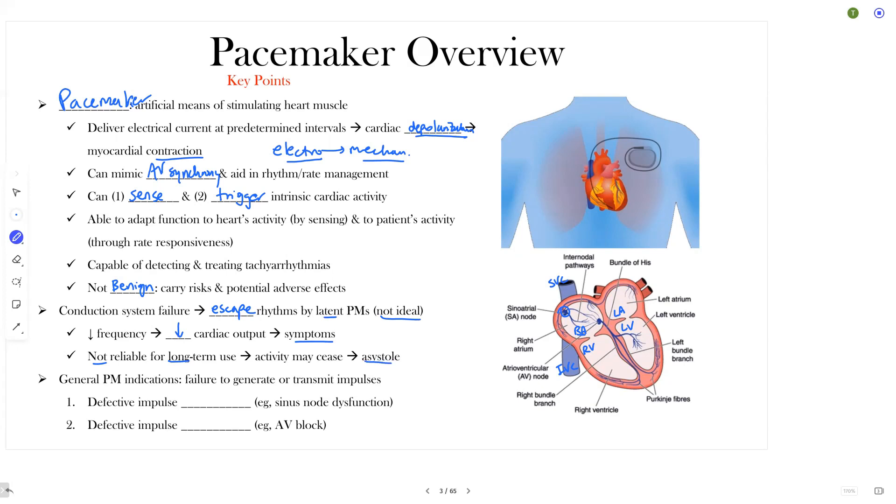Now, in terms of general pacemaker indications, this is just broad brushes. There's two things that you should be aware of from the failure to generate or transmit impulses. This can result from defective impulse formation, and as we mentioned, with the patient with sinus node dysfunction or a defect impulse conduction. So whether you're not forming it correctly or you're not conducting an impulse, as you can see with AV block. So those are the main things, an overview highlighting some of the pacemaker things that we'll get into in much more detail.